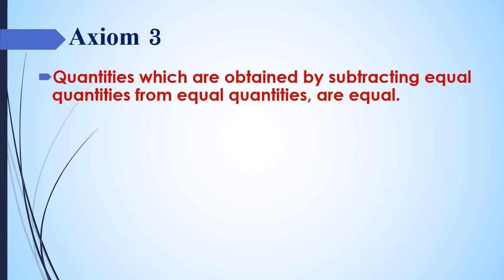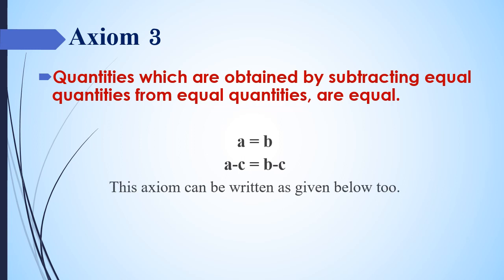Axiom number 3: Quantities which are obtained by subtracting equal quantities from equal quantities are equal. According to the example, if A equals B, we can write A minus C equals B minus C. This can also be explained as: if X equals Y and P equals Q, then X minus P equals Y minus Q.